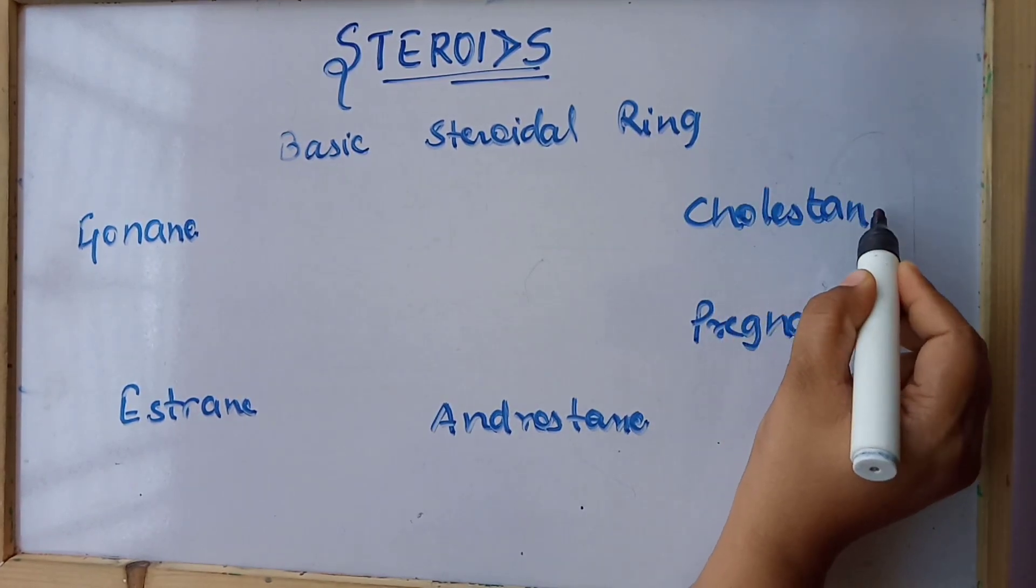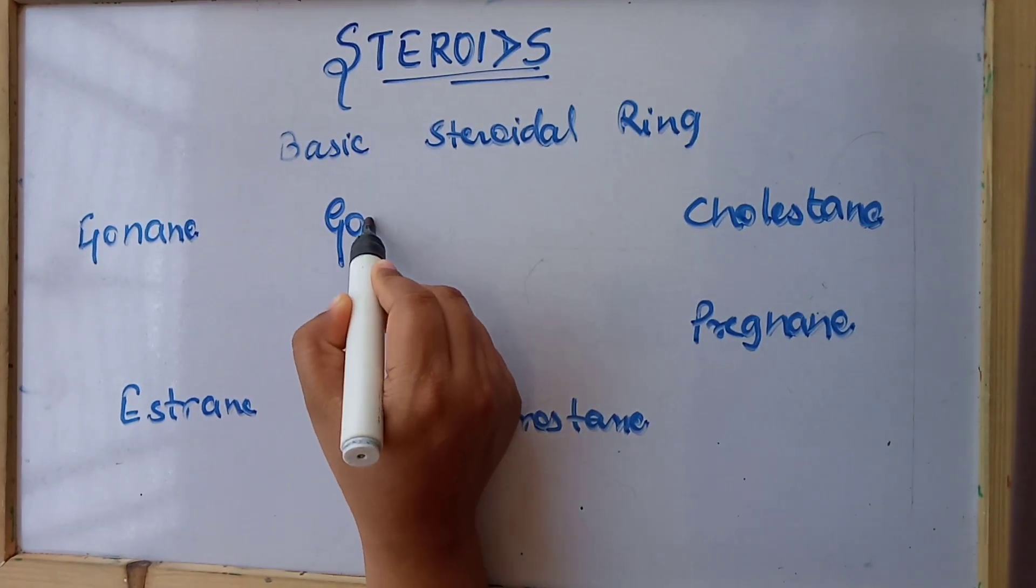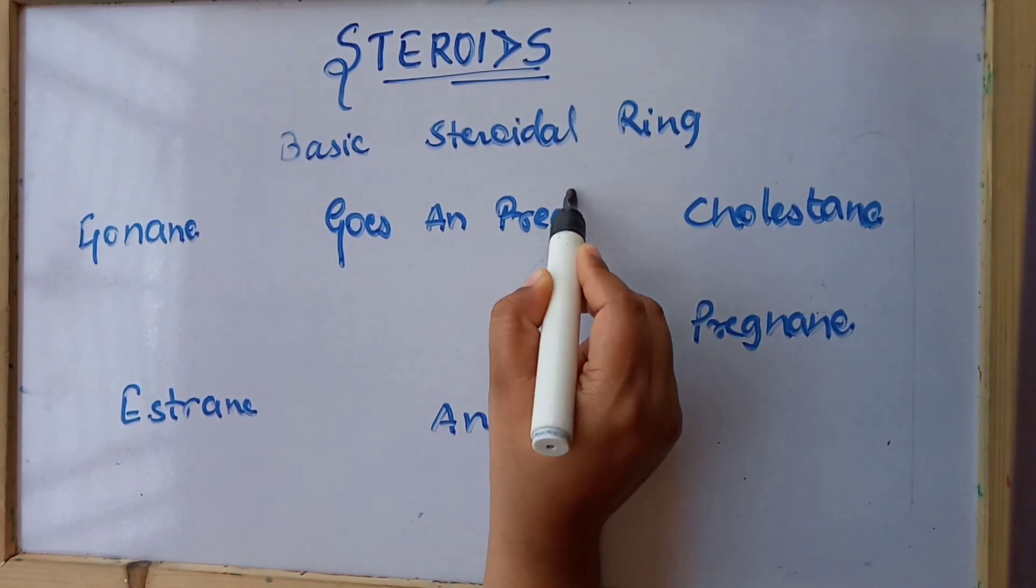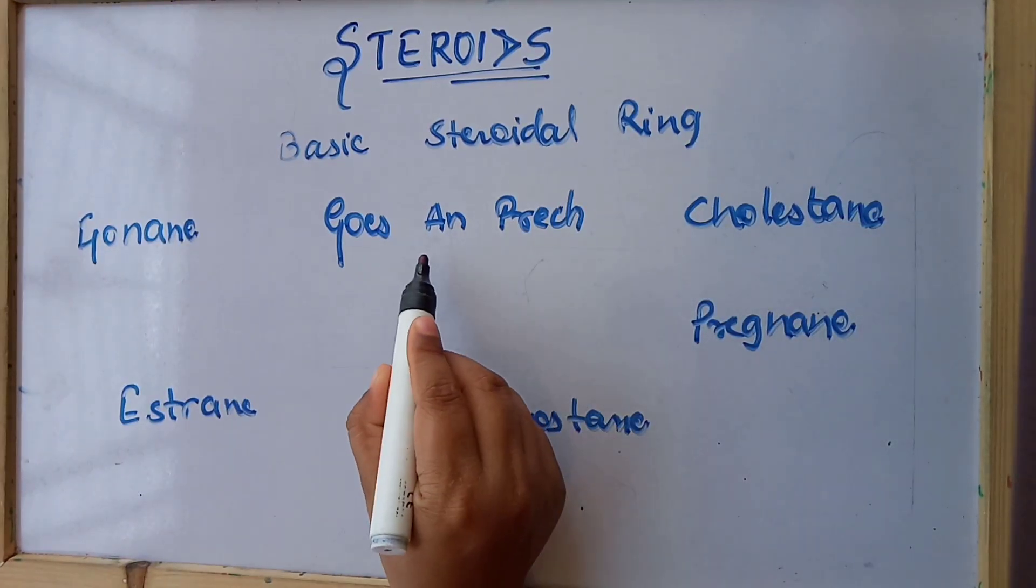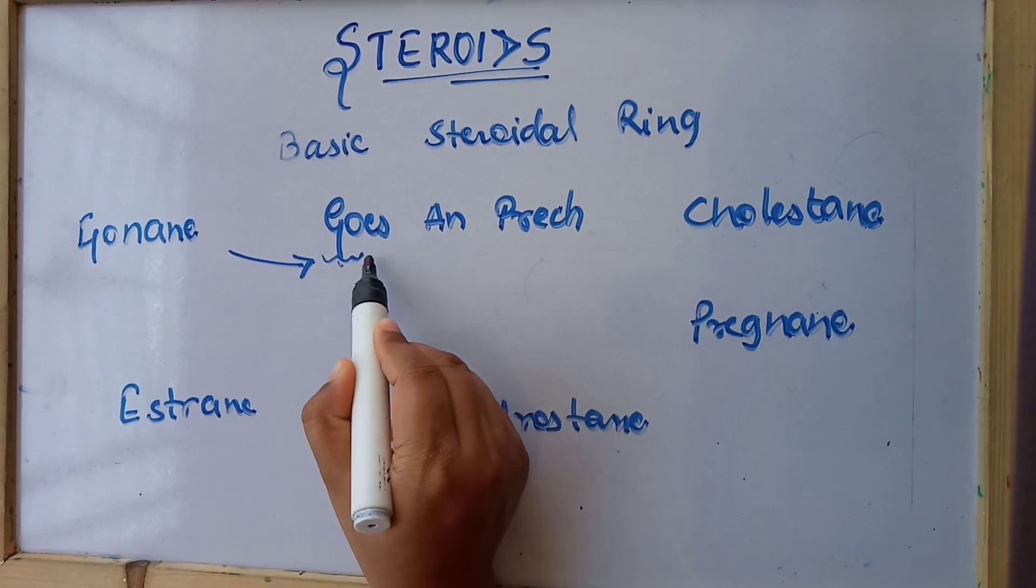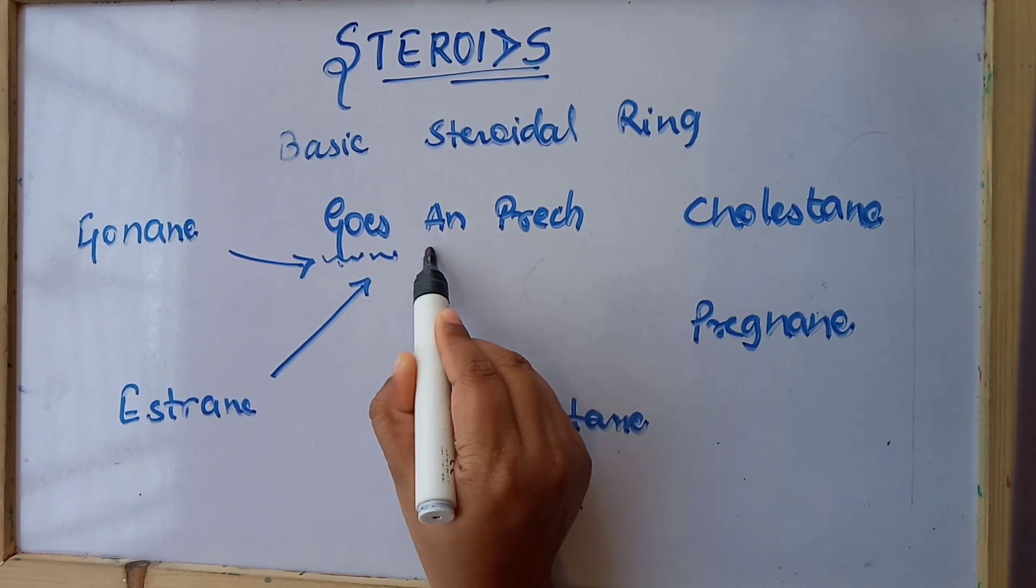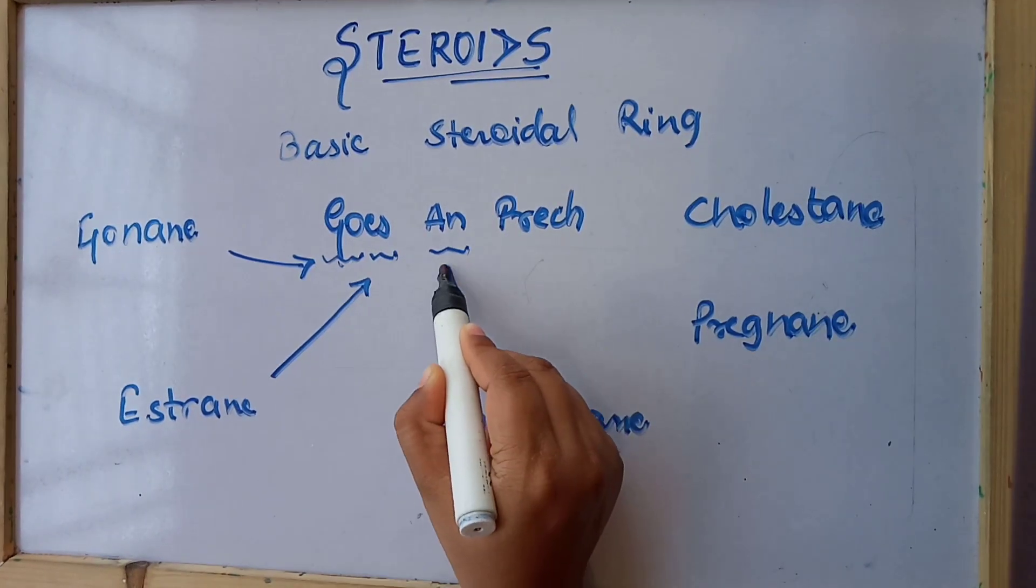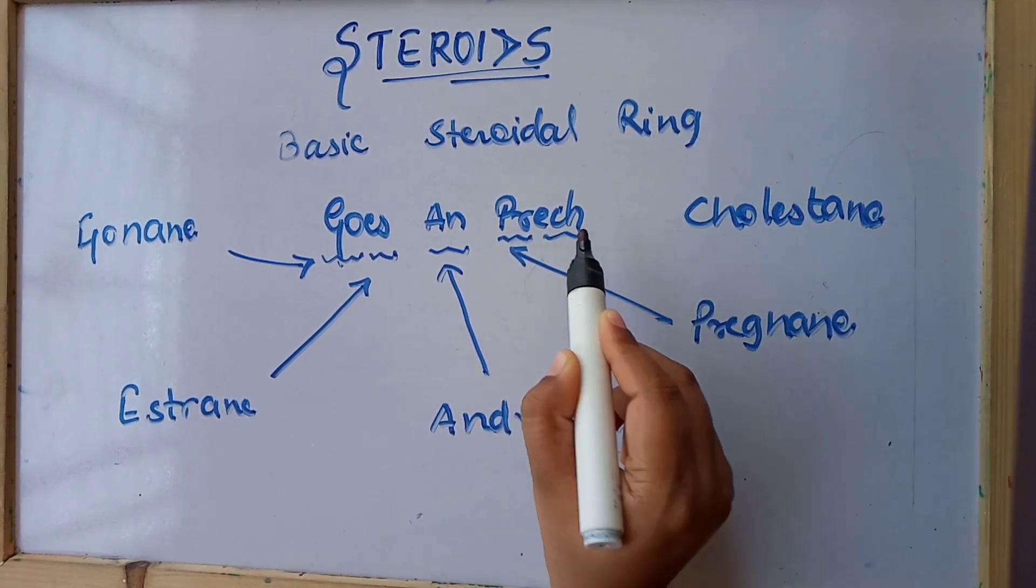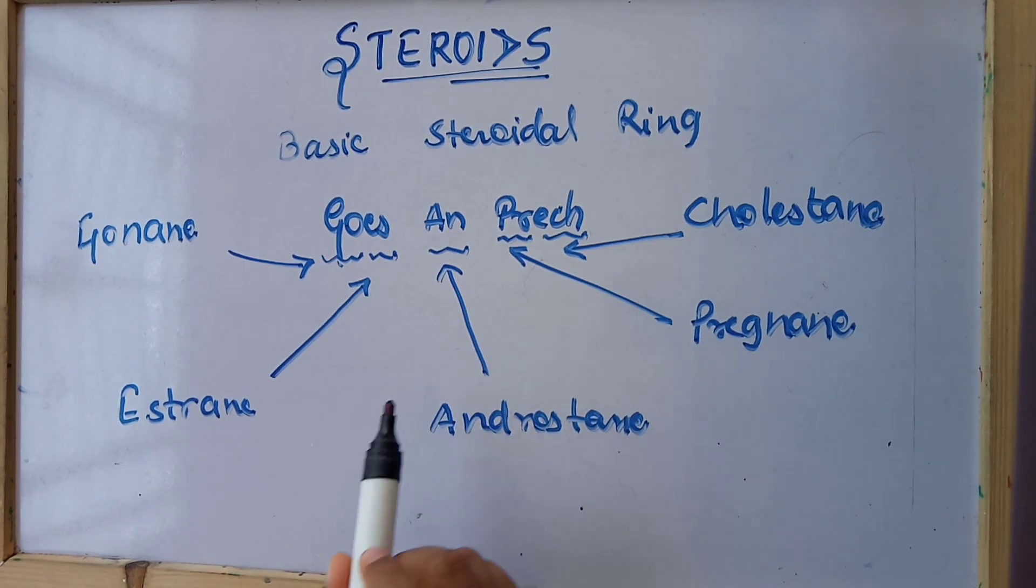So the trick here is: steroids goes and preach. From the trick you can understand this: go means gonane, es means estrane and androstane, preg means pregnane, and cho means cholestane. So the trick is very easy to remember all the basic steroidal rings. That is: steroids goes and preach.